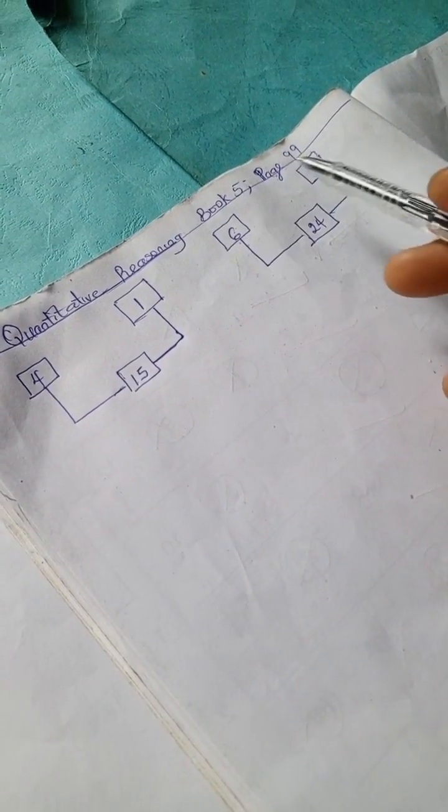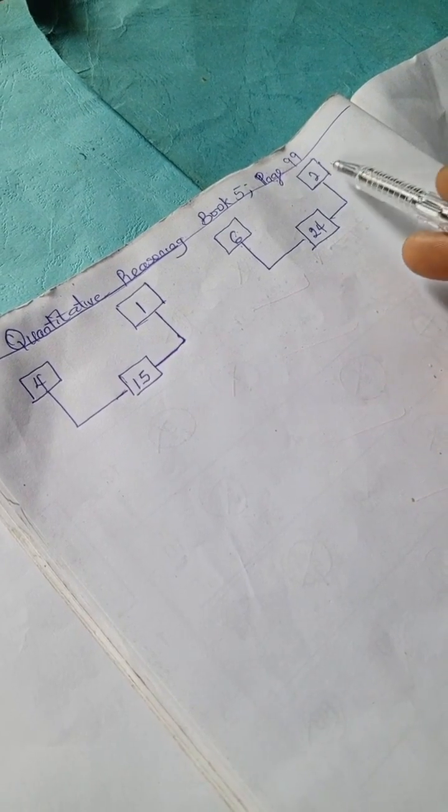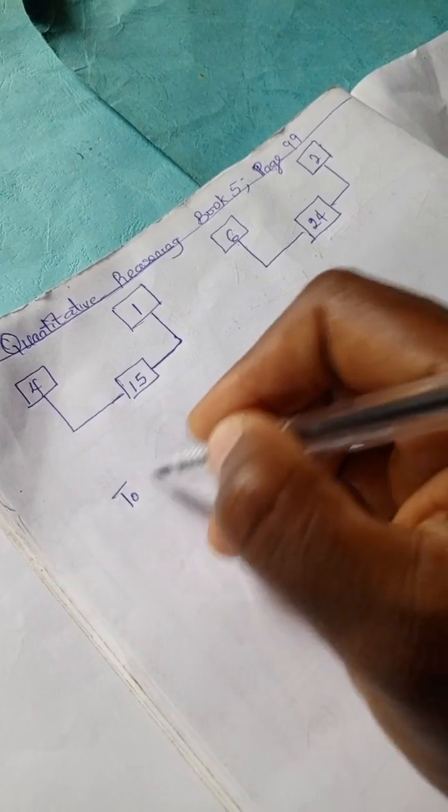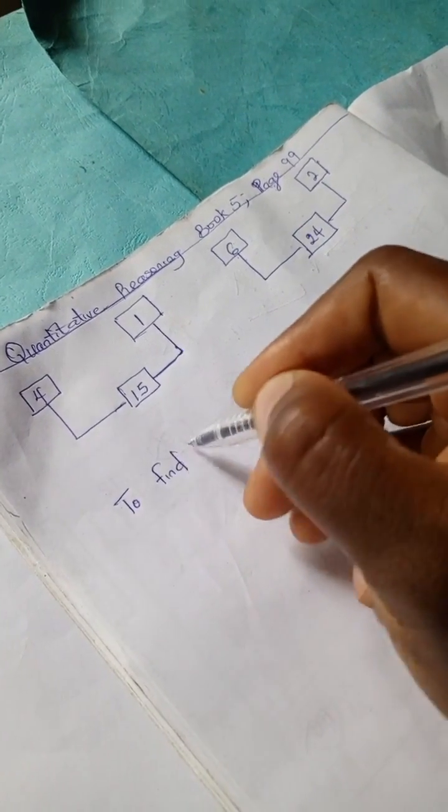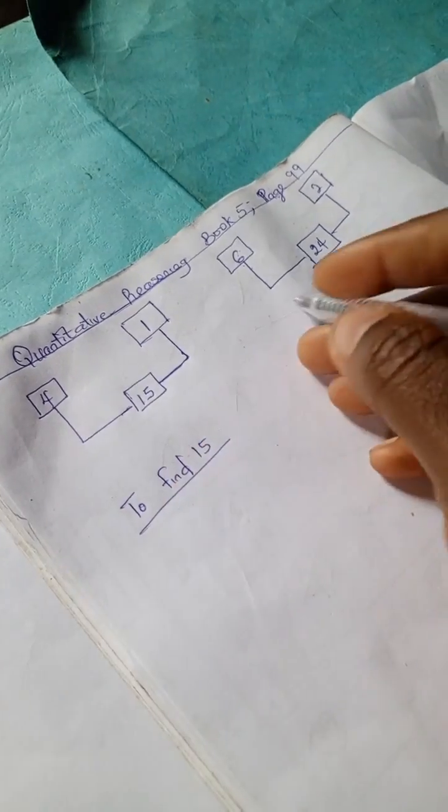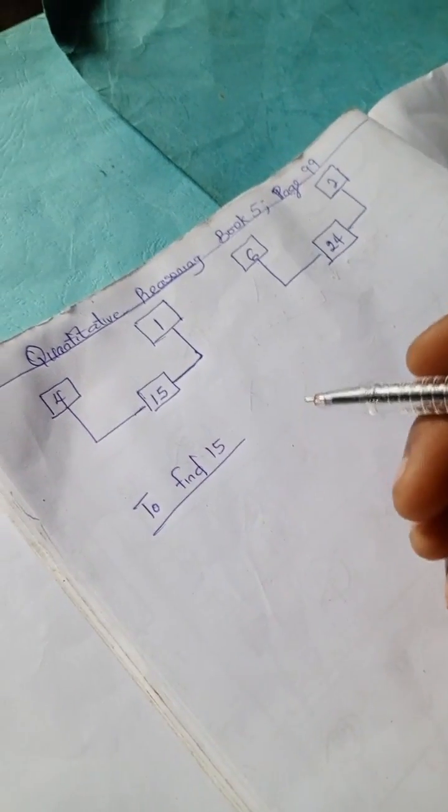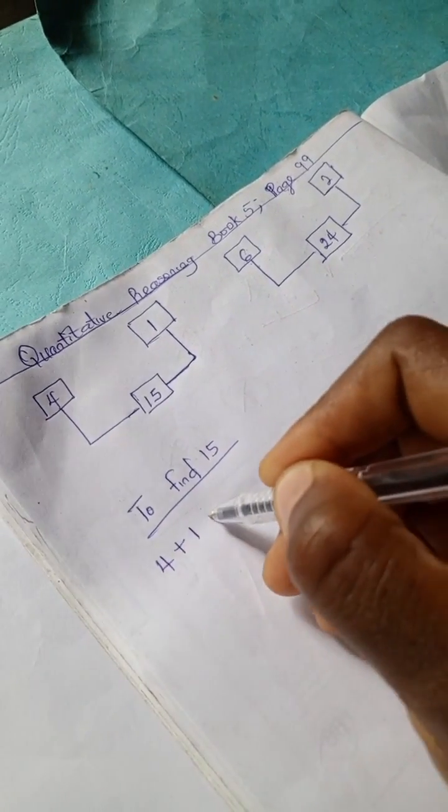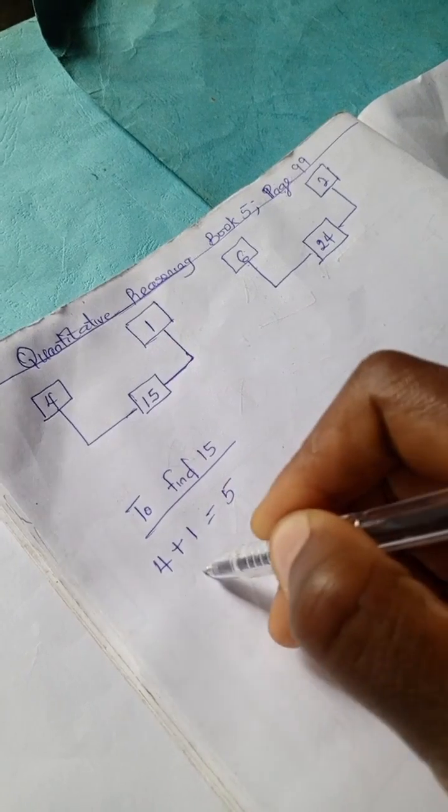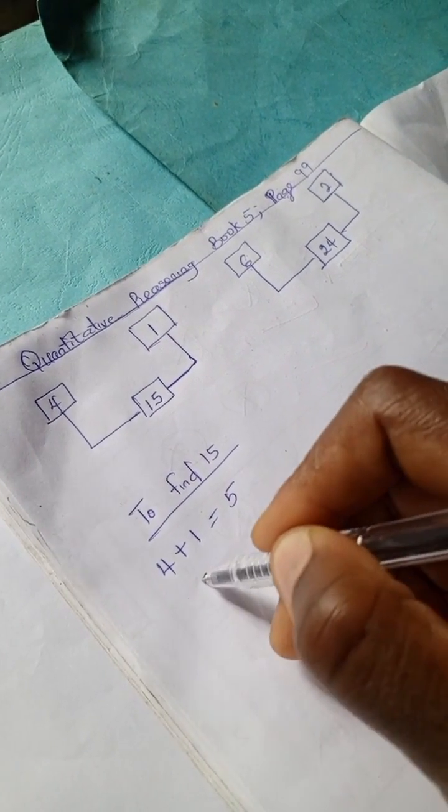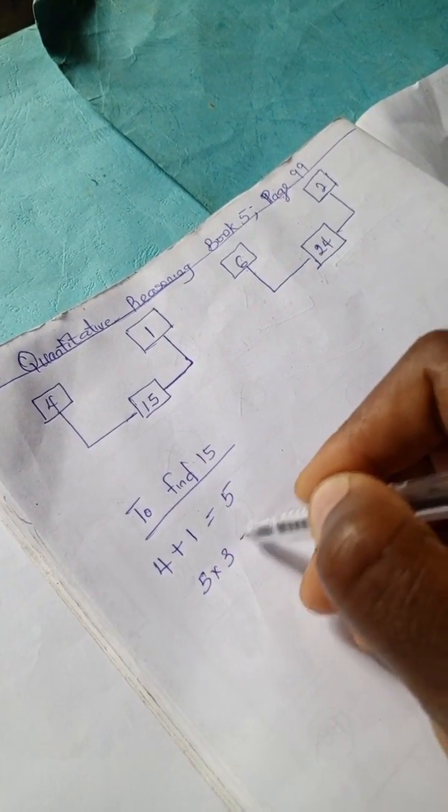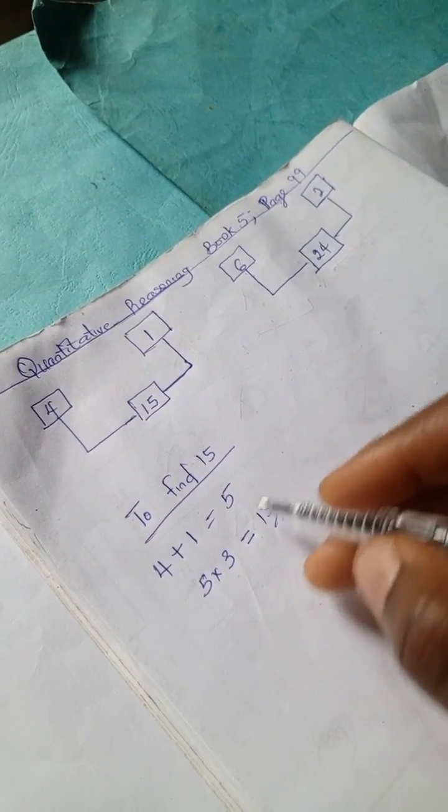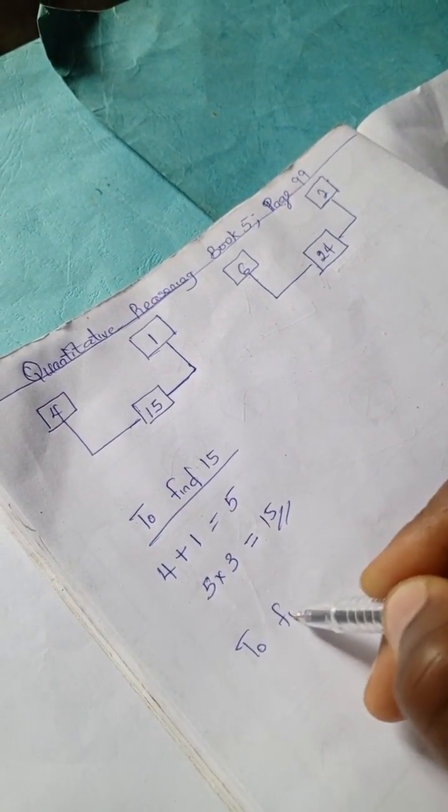To find 15, we're going to have 4 plus 1 equals 5. Then 5 times 3 equals 15. So there's an imaginary 3.